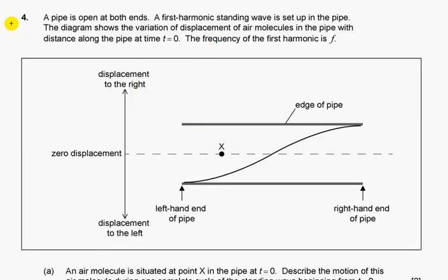Question four: A pipe is open at both ends. A first harmonic standing wave is set up in the pipe. The diagram shows the variation of displacement of air molecules in the pipe with distance along the pipe at time t equals zero. The frequency of the first harmonic is f.